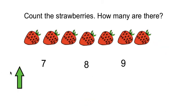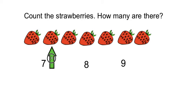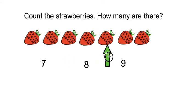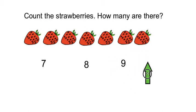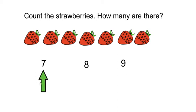Let's do the next one. It says count the strawberries — how many are there? Get your pointer finger ready and help me count the strawberries. Ready? We are starting here; we start with number 1. Let's count: 1, 2, 3, 4, 5, 6, 7. There are 7 strawberries. Can you find number 7? This is number 7 — there are 7 strawberries.